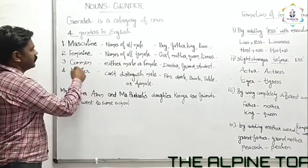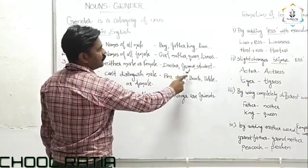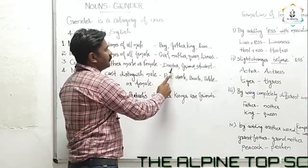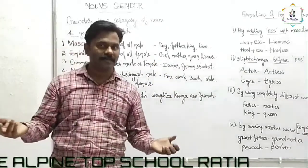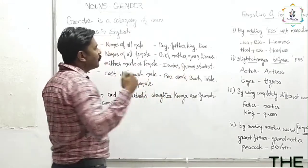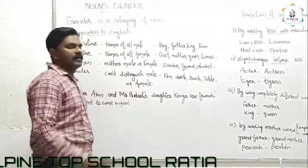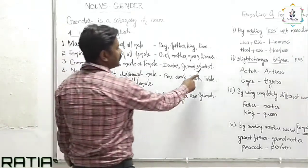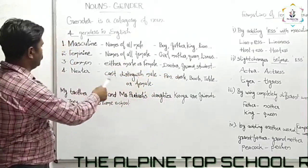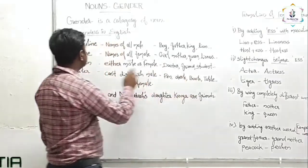The third one is common gender. Examples are: doctor, friend, and student. A male person can also be a doctor and a female person can also be a doctor. A boy can also be a friend and a girl can also be a friend. Girl students and boy students are both there. These types of nouns — either male or female — we can call common gender.